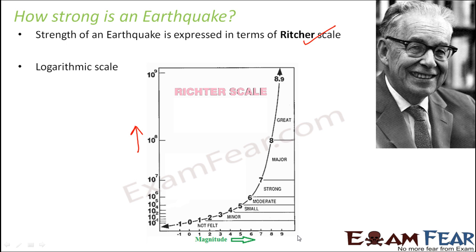The magnitude is measured in values 0, 1, 2, 3, 4, 5, 6, and so on. On the y-axis we take the amplitude (let's call it x), and on the x-axis we take log base 10 of x. That logarithmic value is taken on the x-axis, which is why the Richter scale is a logarithmic scale.